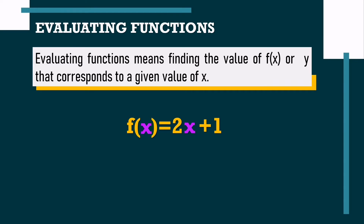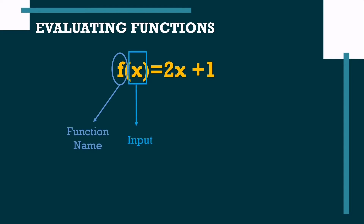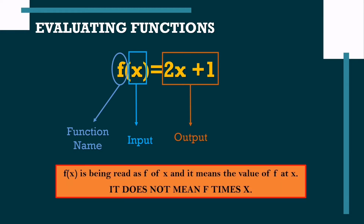For example, suppose we have the function f(x) equal to 2x plus 1. The given function has the function name f. The variable x is the input, and 2x plus 1 is the output. Take note: the function notation f(x) is read as "f of x" and it means the value of f at x — it does not mean f times x.